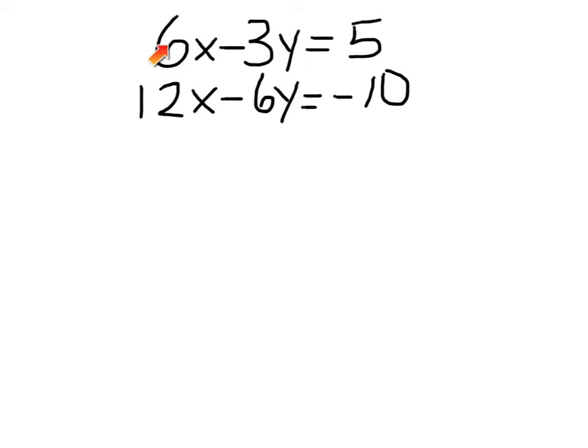So let's go ahead and multiply the top one, both sides, by minus 2. Minus 2 on that side, minus 2 on that side. So, minus 2 times plus 6x, minus 12x, minus 2 times minus 3y, minus times minus, is plus 6y. And over here, minus 2 times 5, minus 10.